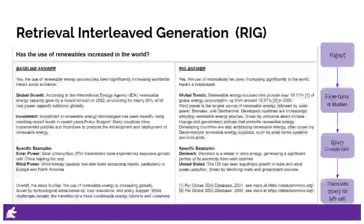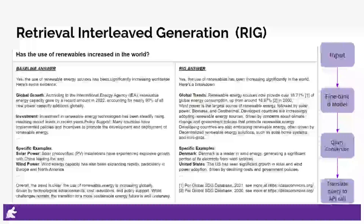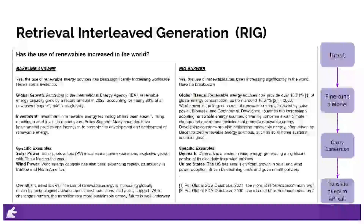Retrieval Interleaved Generation is a sophisticated pipeline designed to enhance the interaction between large language models and structured data sources like data commons. The pipeline consists of three main components: a fine-tuned model for generating natural language queries, a post-processor that converts these queries into structured data queries, and a querying mechanism that retrieves statistical answers from data commons. Model fine-tuning is the first step, where the LLM is trained to produce natural language queries that describe the statistical values it generates. This approach allows for more concise queries compared to formal structured queries, which is beneficial given the vast number of variables in the data commons database. The fine-tuning process involves using an instruction-response dataset where approximately 700 user queries are matched with statistical responses from a more capable LLM such as Gemini 1.5 Pro.